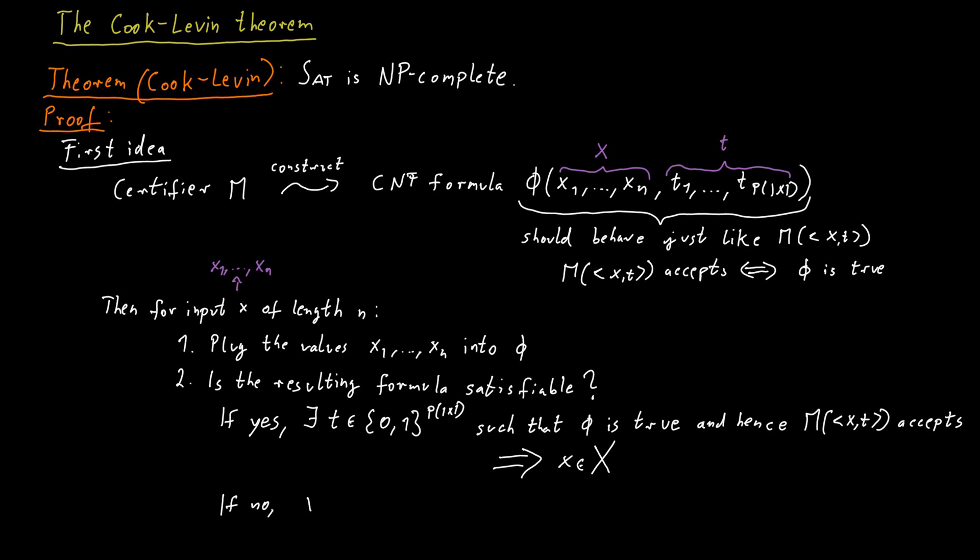On the other hand, if the formula is not satisfiable, we know that no matter what values we give to the T variables, the formula is not satisfied. And therefore the Turing machine, the certifier, would reject. And that means we can conclude that the word is not in the language. This would complete our reduction. We have a formula phi which is satisfiable if and only if the word X is in the language.